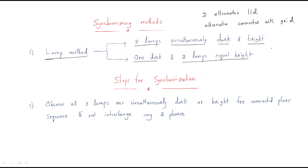When connecting, one lamp is between R phase and R phase, one lamp is between Y phase and Y phase, and one lamp is between B phase and B phase. When the supply is the same, all three lamps become simultaneously dark or simultaneously bright.